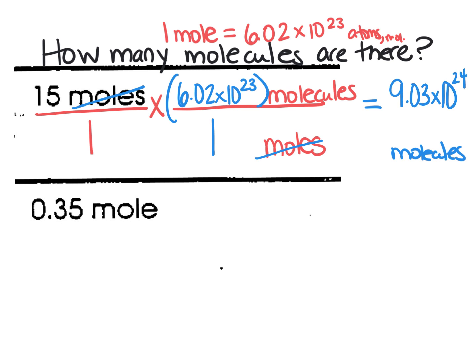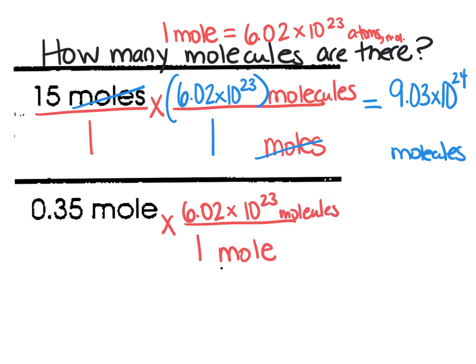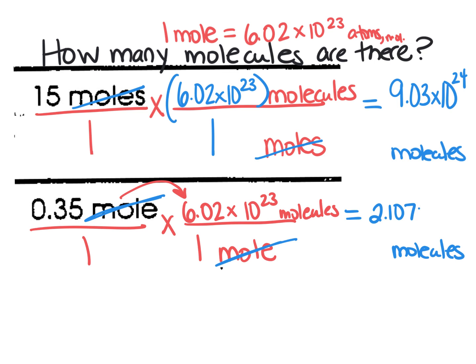Go ahead and pause the video and try to do the next one on your own. For the next one, I want moles on the bottom. I know that one mole is equal to 6.02 times 10 to the 23rd molecules. So we take 0.35 and multiply it by 6.02 times 10 to the 23rd because moles cancels out. Into my calculator, 0.35 times 6.02 times 10 to the 23rd gives you 2.107 times 10 to the 23rd molecules.